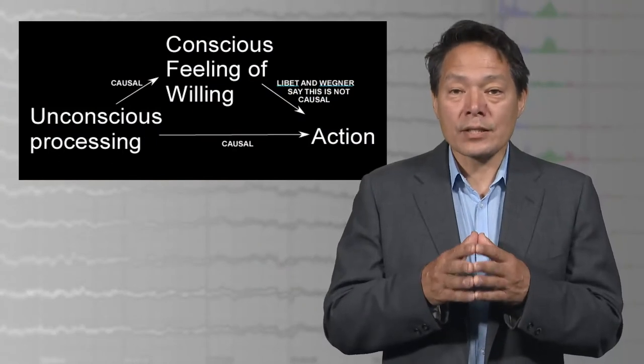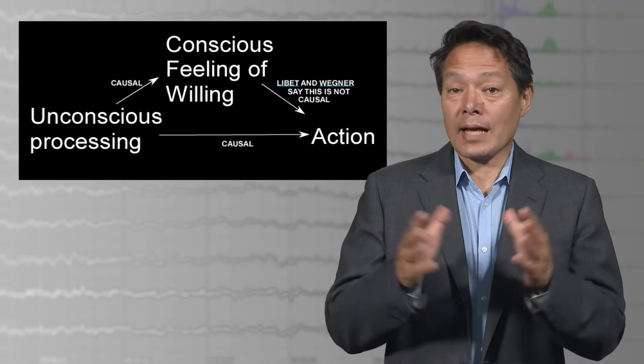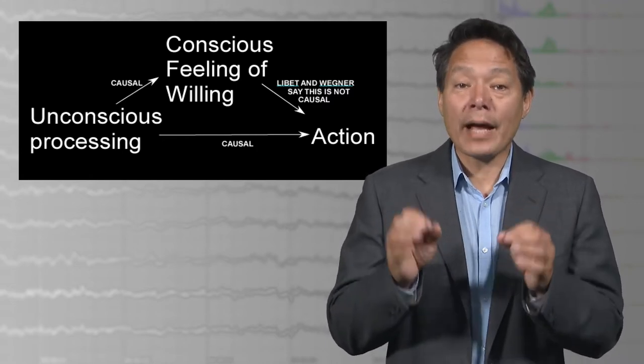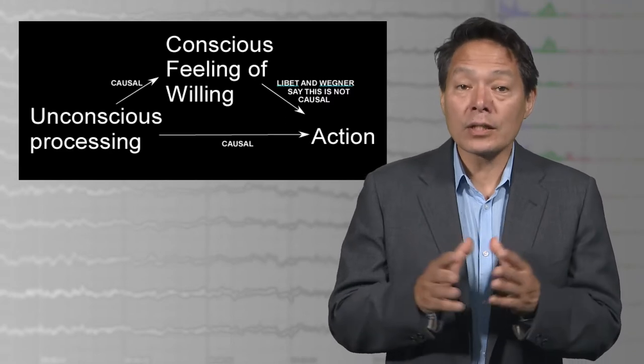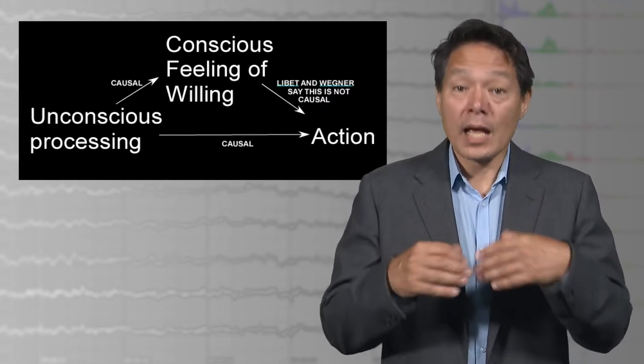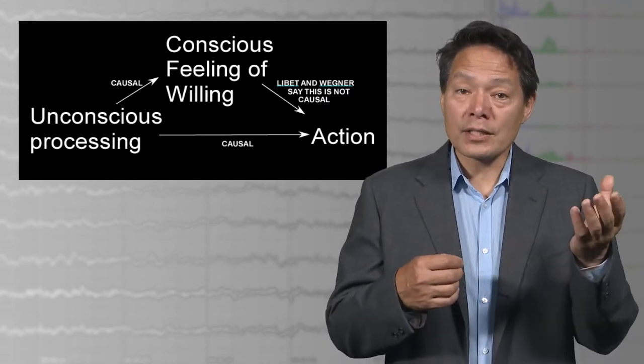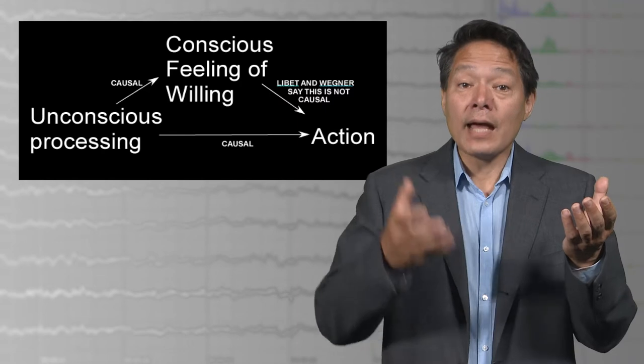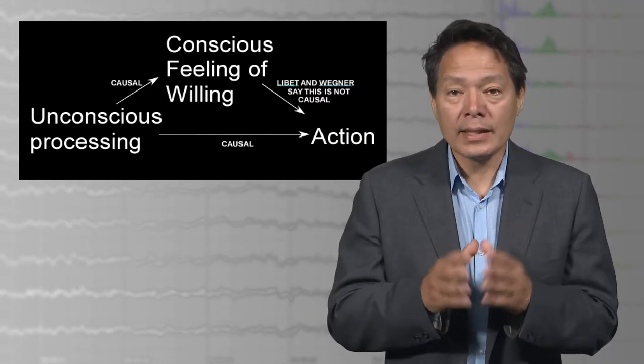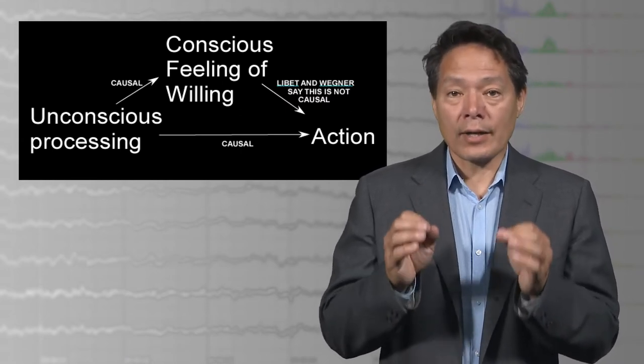Wegner argues that mental causation is also like this. Consciously willing event X to happen may appear to cause X to happen, but it's only apparent mental causation. According to Wegner, what's really going on is that a hidden variable, in this case preceding unconscious computations, cause both the conscious experience of willing an action and then also cause the later occurrence of that action. But like Libet, he concludes that the conscious feeling of willing does not cause our actions.